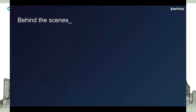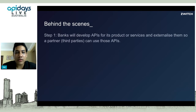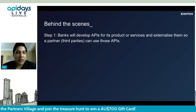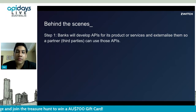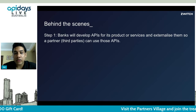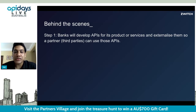Let's understand how this behind-the-scenes action happens — how Banking as a Service works. We'll break it down into two steps. Step one: banks develop APIs for their products and services and externalize them so that a partner — a third party, a technology service provider, an API banking service provider — can use those APIs. Through APIs, banks pretty much govern the product, the same way McDonald's governs the product while the food delivery app provisions it to the consumer.